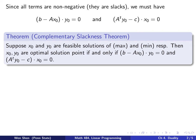This discussion leads to the following theorem, the Complementary Slackness Theorem. Suppose x0 and y0 are feasible solutions of the max and min problems respectively. Then x0 and y0 are optimal solution points if and only if (b minus Ax0) dot y0 equals 0, and (A-transpose y0 minus c) dot x0 also equals 0.